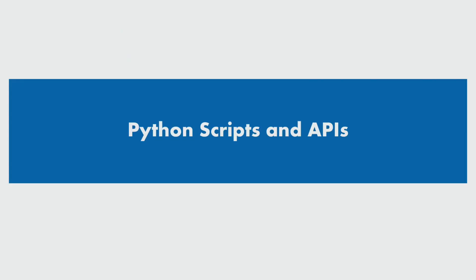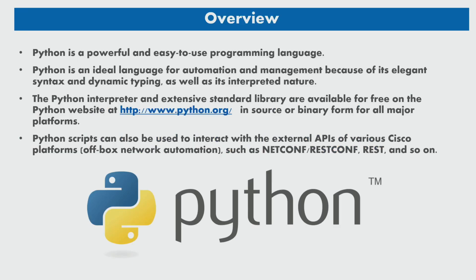Let's talk about Python scripts and APIs. Python is a powerful and easy-to-use programming language, ideal for scripting and rapid application development. It has high-level data structures and a simple but effective approach to object-oriented programming. Python is an ideal language for automation and management because of its elegant syntax, dynamic typing, and interpreted nature.